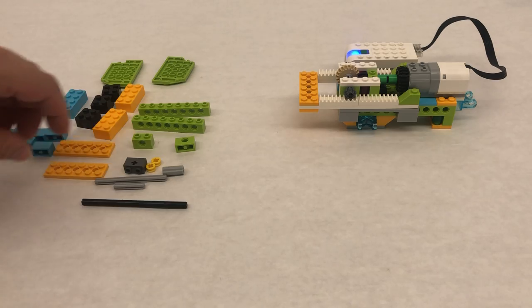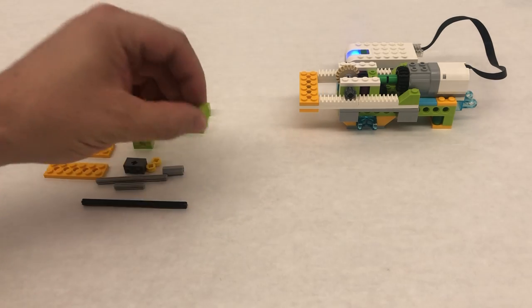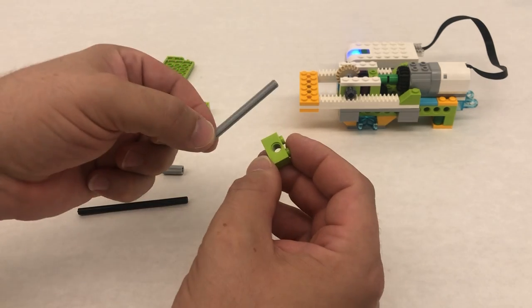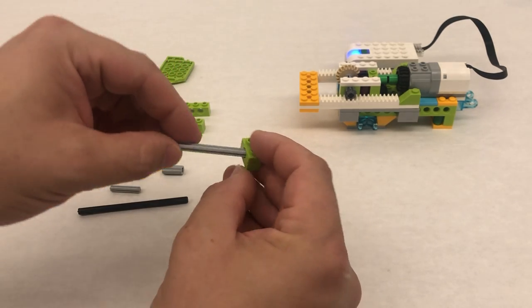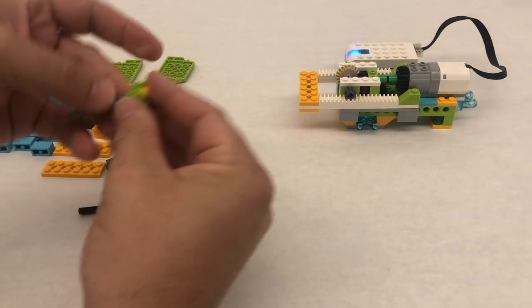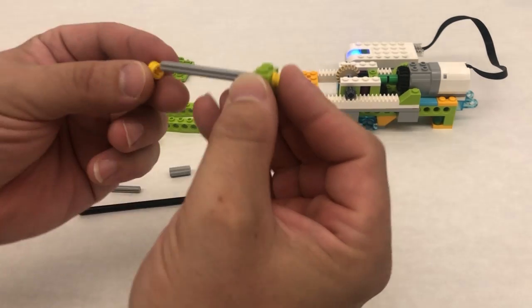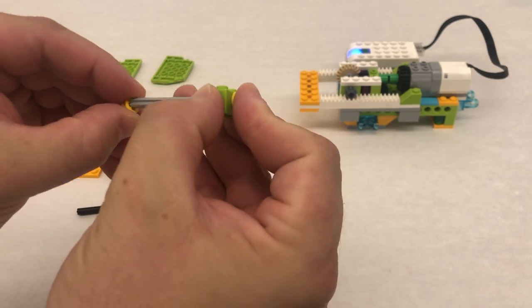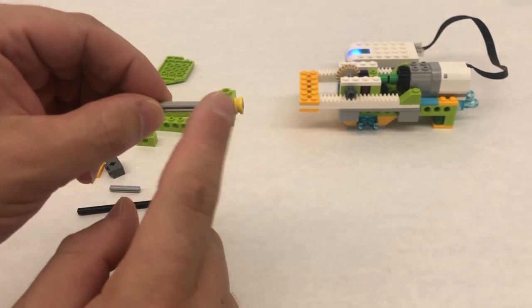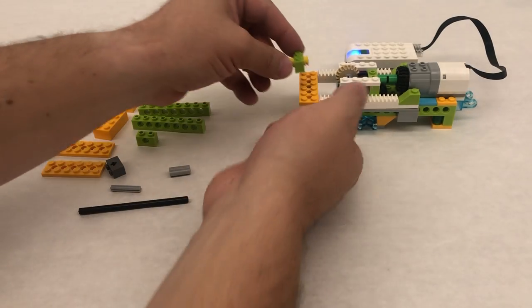So the first thing is we're gonna need a control rod. I'm just gonna take a 1x2 Technic brick. I'm gonna take my length 7, this is kind of the longer gray piece, and we're just gonna have it sticking out like this and then secure it in place by putting another one of these one-third yellow bushings on this side. Here's our control rod.